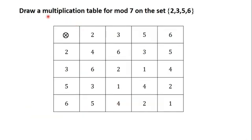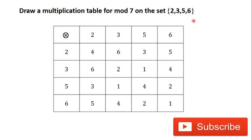We have now completed our multiplication table for mod 7 on the set {2, 3, 5, 6}. Thank you for watching this video. Subscribe to this channel for more videos. In the next video, we are going to solve another question on drawing a table for an operation in a given modulus when the set of values have been defined for you.